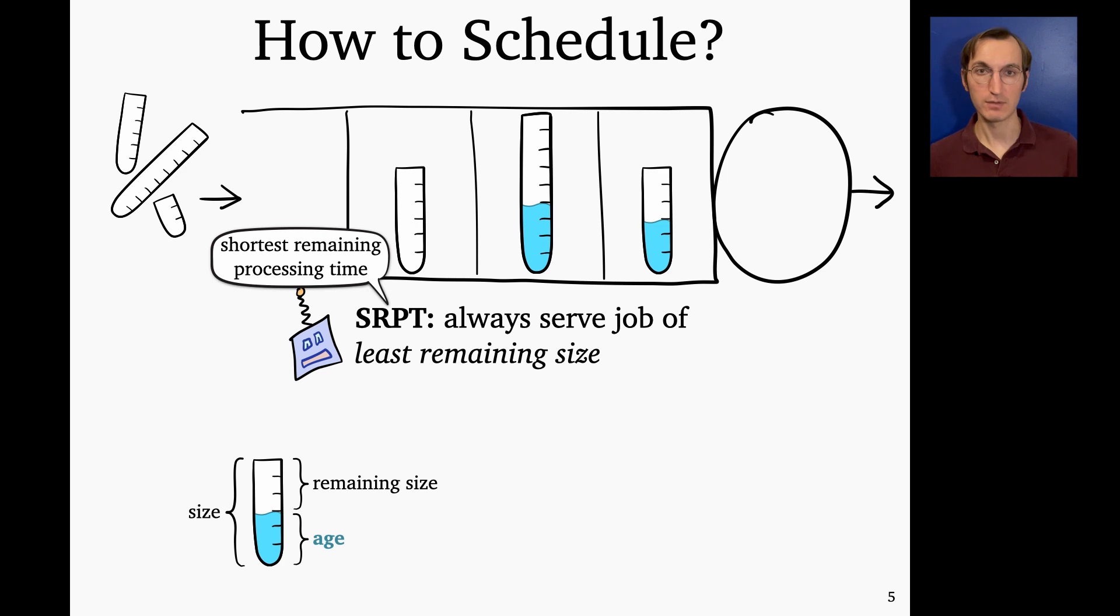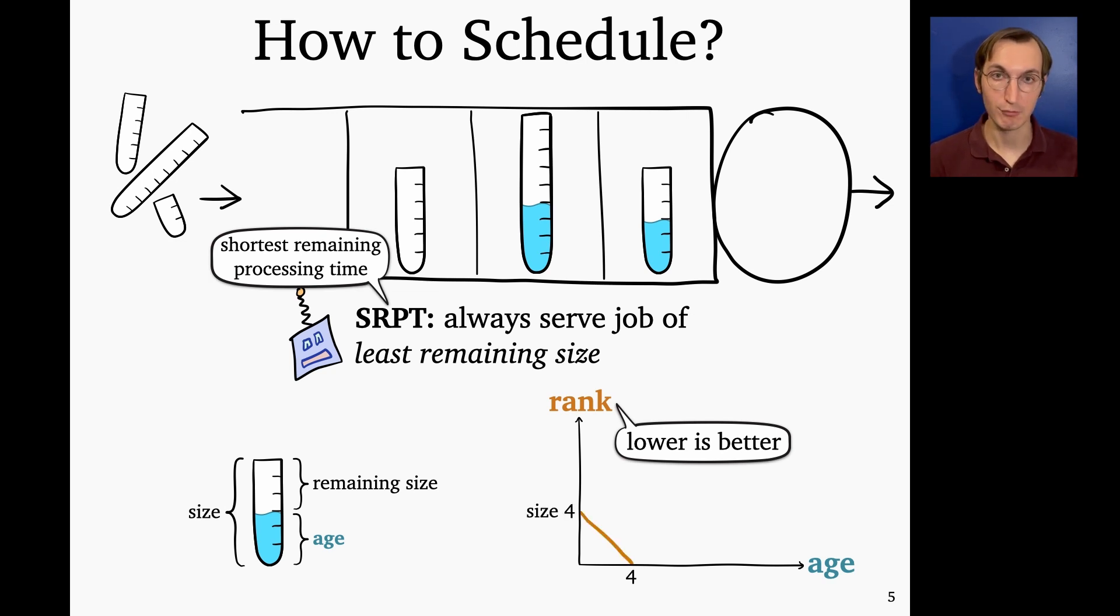So in this setting, this is a kind of classic problem. And to minimize mean response time, the optimal policy is called SRPT, stands for shortest remaining processing time. It always serves a job of least remaining size. The intuition here is that whichever job you can get out of your system at the fastest, that's the job you should serve if you want to minimize this sort of total waiting time of jobs that occurs. And so I like to visualize SRPT in the following way, as what's called a rank function. So here a job's rank is its priority, it's a number where lower is better. And so to visualize SRPT as a rank function, I might say a job of size four starts at rank four, and its rank will be its remaining size.